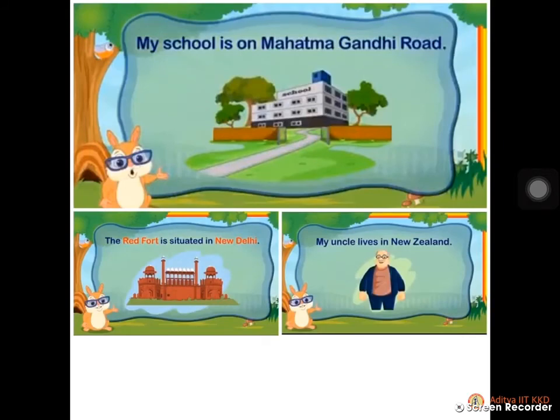'My school is on Mahatma Gandhi Road. The Red Fort is situated in New Delhi. My uncle lives in New Zealand.' Here we have mentioned the place where the school is, where the Red Fort is situated, and where the uncle lives. We have specified the names of places and cities. So these all come under proper nouns.